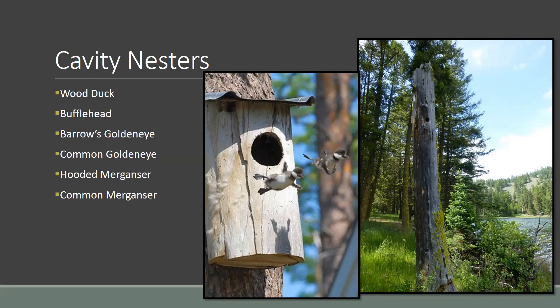Sheila asks about black swans. Ken thinks they may be a color morph of a mute swan that is a domestic or domestic mix. Mute swans are native to Europe and have been introduced around North America, going feral in places — the classic example being Central Park in New York. These introduced mute swans are really hard on native species. Ken notes he could be mistaken about the color morph detail.